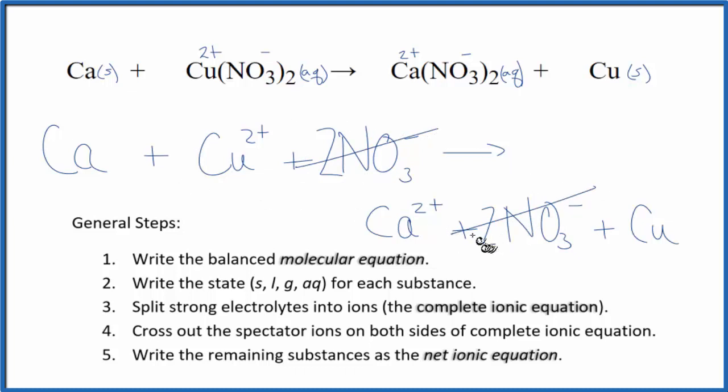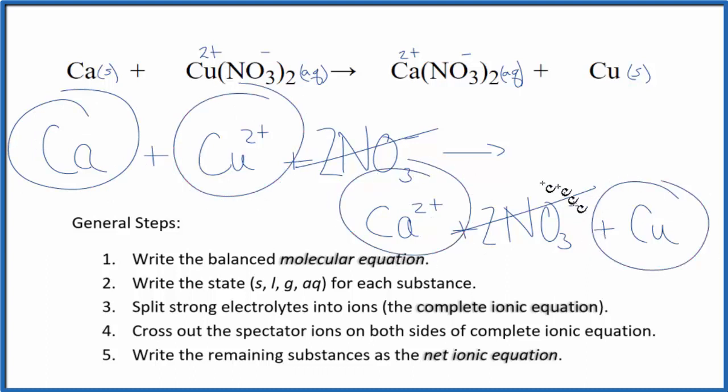But everything else, that's unique. So that's going to give me a net ionic equation. We have calcium, copper 2 ion, calcium 2 plus, copper metal. So let me clean this up and write the states in for each one. And we'll have our net ionic equation for Ca plus Cu(NO3)2.